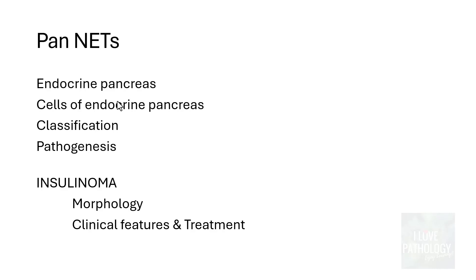In the next 8 to 10 minutes, let's see the histology of normal endocrine pancreas, looking at the various cells of endocrine pancreas. We will see how pancreatic neuroendocrine tumors can be classified, understand a bit about pathogenesis, and finally look into what insulinoma is.